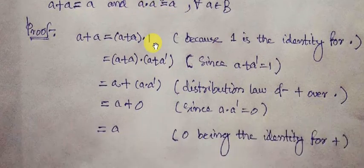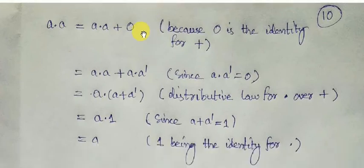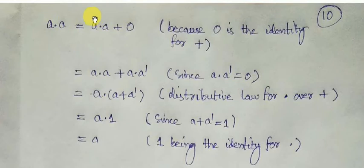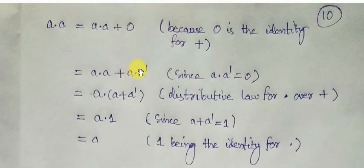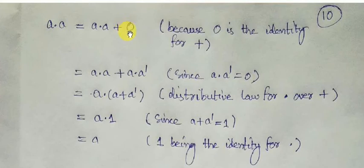Since 0 is the additive identity element, we can write A into A equals A into A plus 0. Also, from the complementation law, we know A into A-complement equals 0, the additive identity element. So in place of 0, we write A into A-complement, giving us A into A plus A into A-complement.